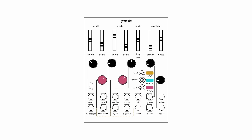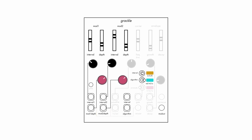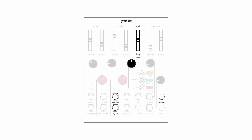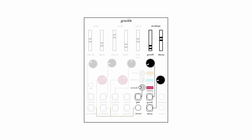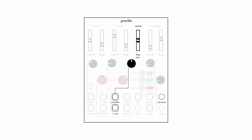Grackle is broken up into three sections: two sine wave modulation oscillators, a carrier oscillator, and a multimode envelope. The carrier oscillator provides the primary audio output.